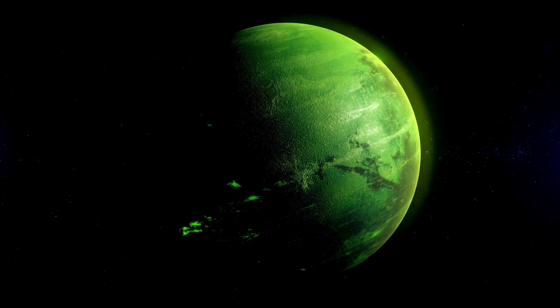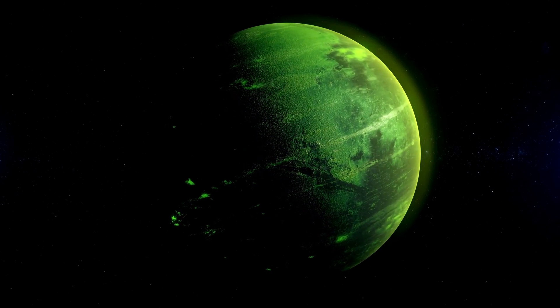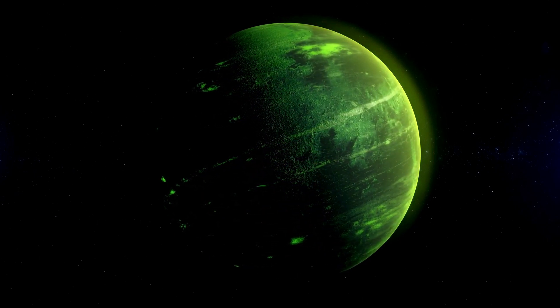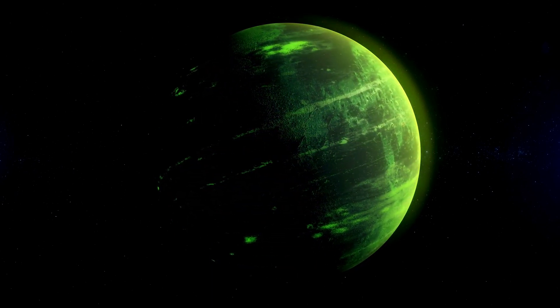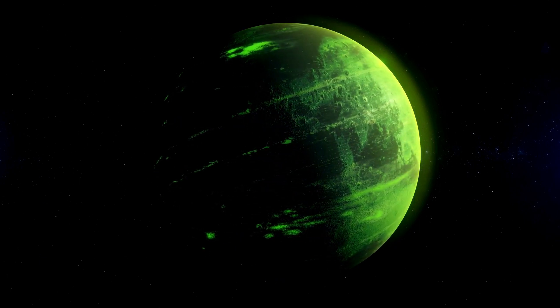The sun will eventually exhaust its nuclear fuel and expand into a red giant, engulfing Mercury, Venus, and possibly even Earth before collapsing into a white dwarf.